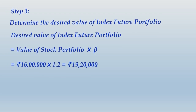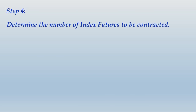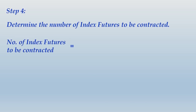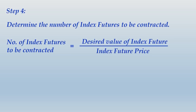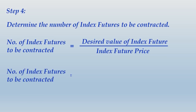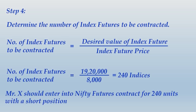Step 4: Determine the number of index futures to be contracted. Number of contracts = desired value of index future portfolio / index futures price = Rs. 19,20,000 / Rs. 8,000 = 240 indices. So Mr. X should enter into a Nifty futures contract for 240 units with a short position.